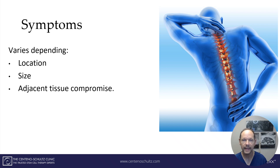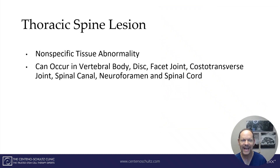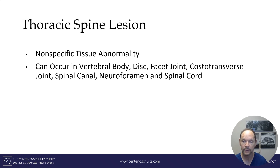Symptoms of a thoracic lesion vary significantly depending upon the actual location of the lesion, the size of the lesion, and whether or not there's any adjacent tissue injury or damage. So again, a thoracic spine lesion is a nonspecific tissue abnormality. It can occur in the vertebral body, the thoracic disc, the thoracic facet joint, costal transverse joint, spinal canal, neural foramen, and spinal cord.